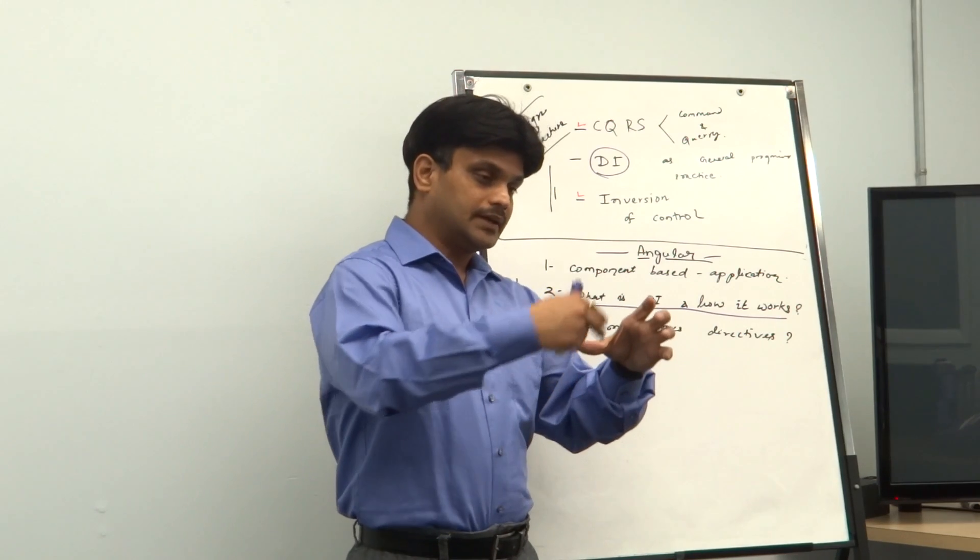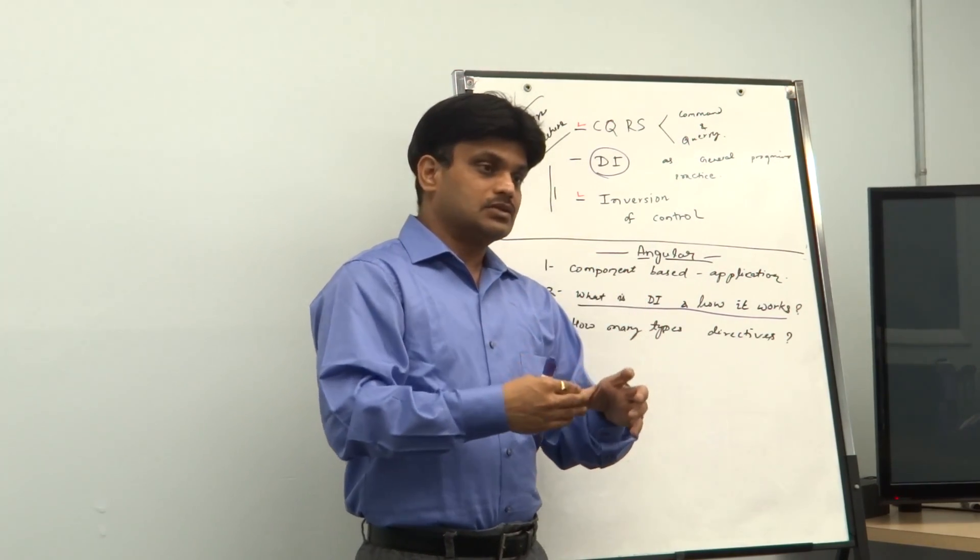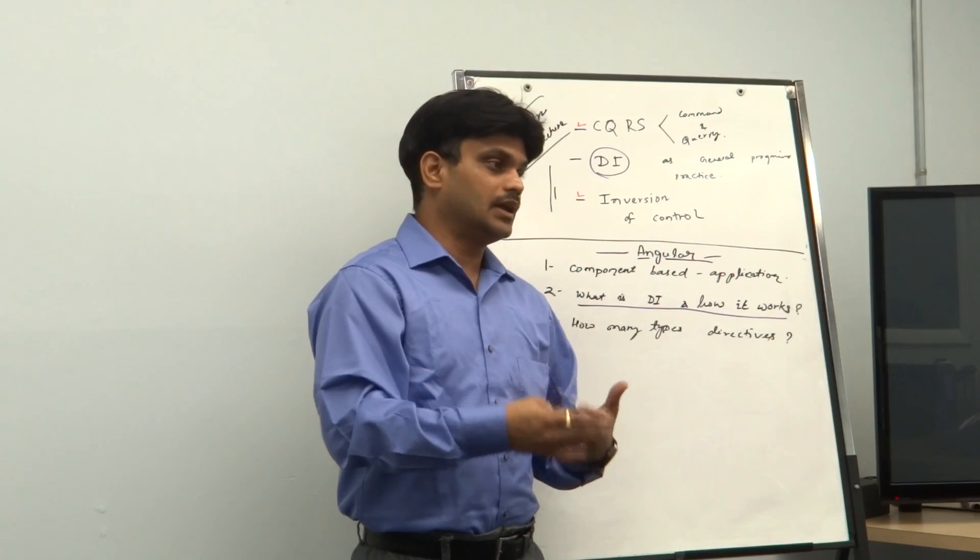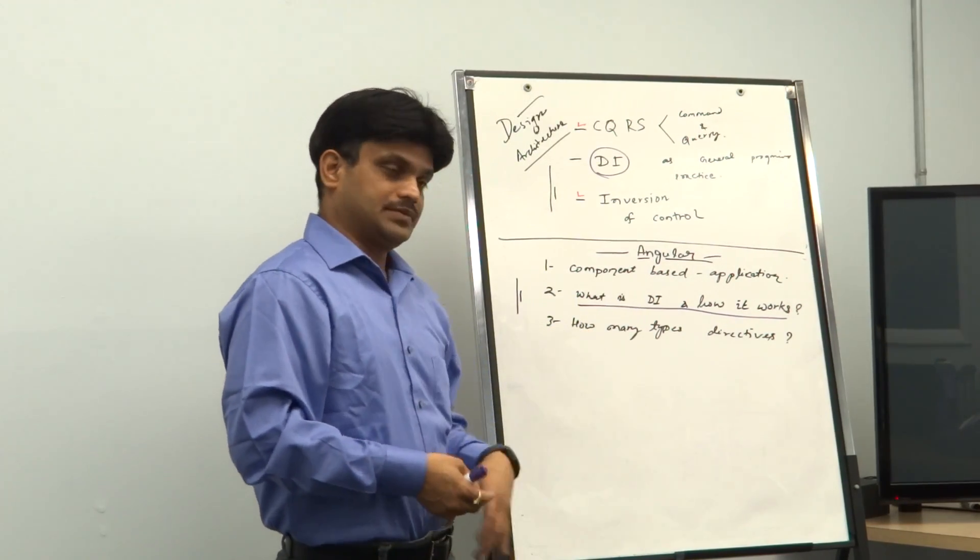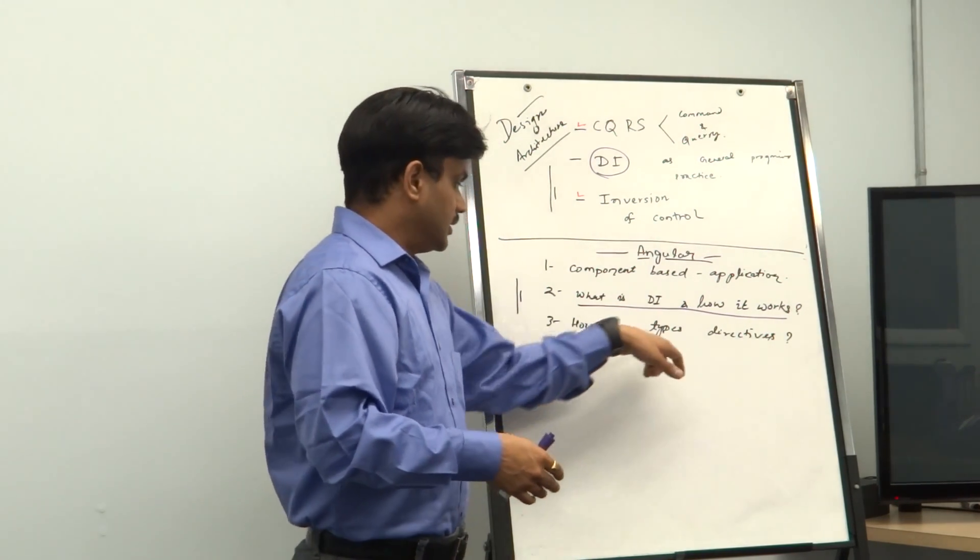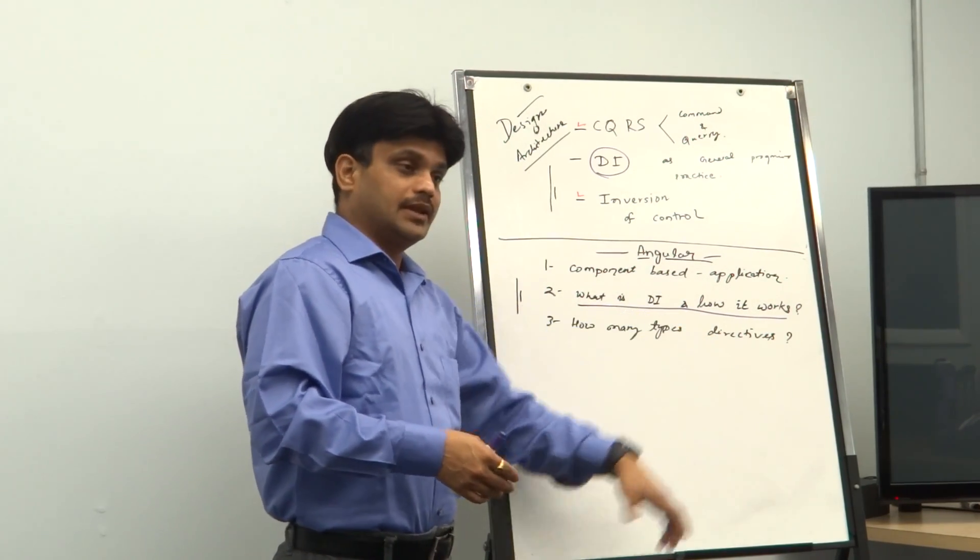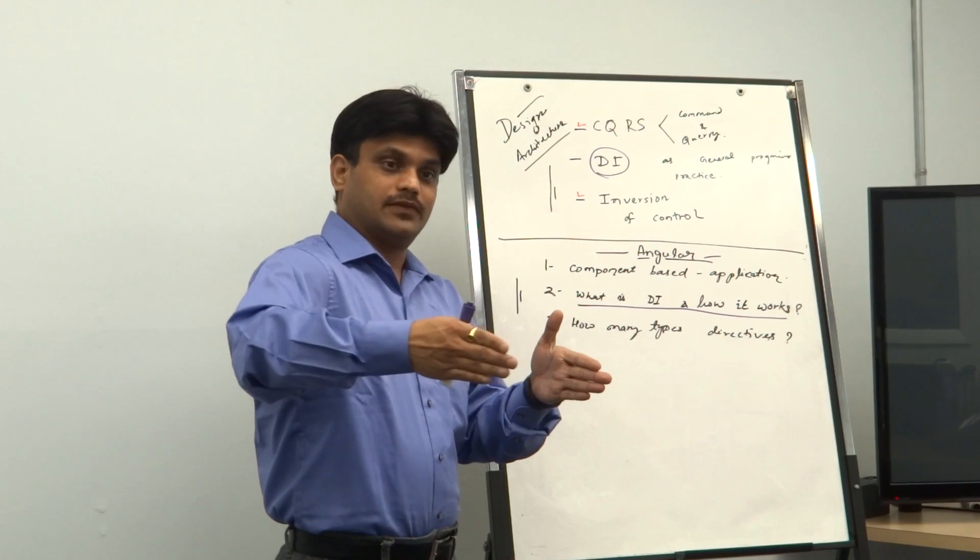So you know that there is selector, there is this and that. So which one is important and why I write all of them. Those kind of things we will discuss. And then how many types of directives is just like same. It is inbuilt things like how many different categories of directives they have. Like some of them are structure.